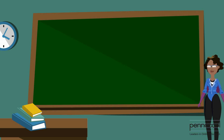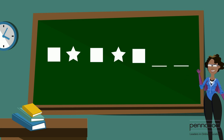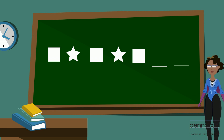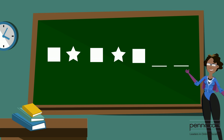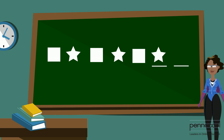Let's look at the pattern below. What two shapes should go to finish the pattern? Well, let's see what shape is repeated after every square. That's right, a star. And what shape is repeated after a star? That's right, a square. You've completed your first pattern.